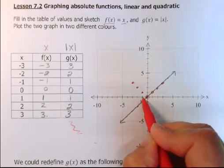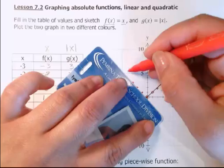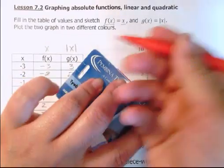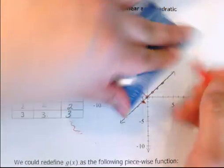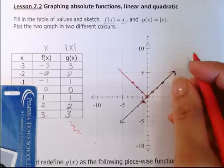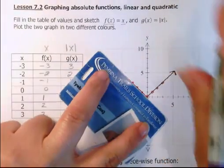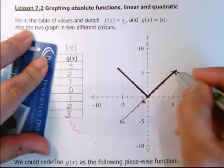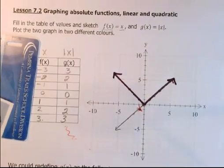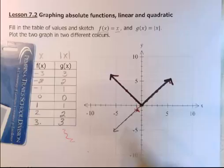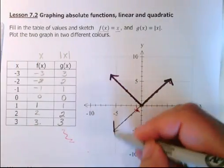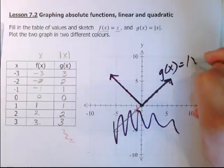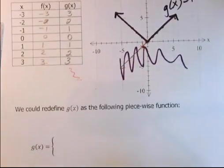Notice what happens — those negative points don't stay below; they end up going up. The graph looks like a V: one line going up to the right and one going up to the left. Make sure you put arrowheads on either end. The points that were below the x-axis jumped up and became positive, so that lower portion is no longer part of the graph. This is g(x) = |x|.